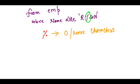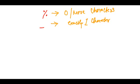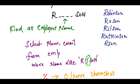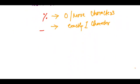We also have another character, which is the underscore. The underscore matches exactly one character. So let's suppose I want to find people whose second character is I.